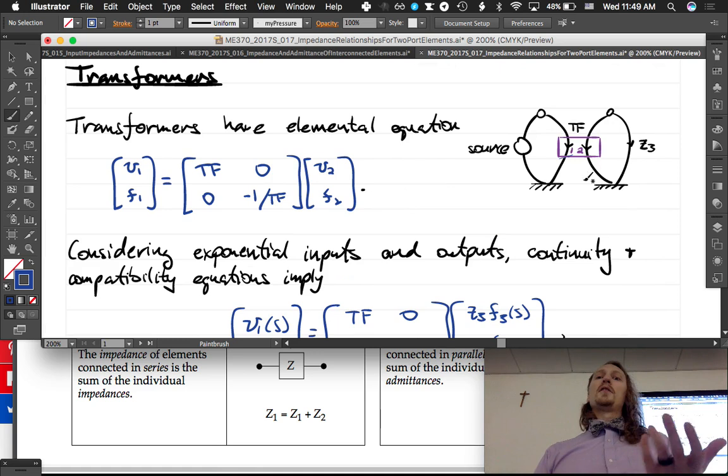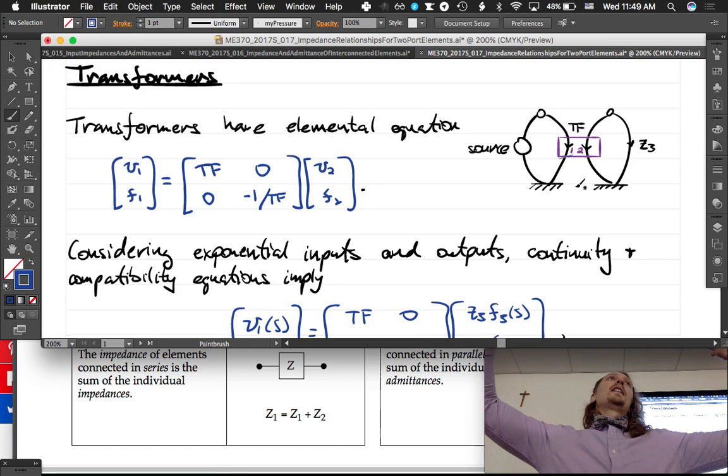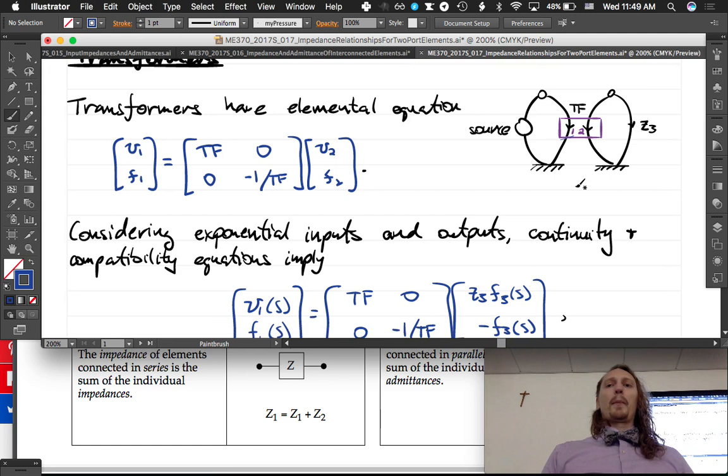We sometimes call this reflecting the impedance through the transformer, and you just square the transformer ratio. This is a very general situation. We can always say there's a transformer here; the impedance on the left side is equal to the impedance on the right side times the transformer ratio squared.